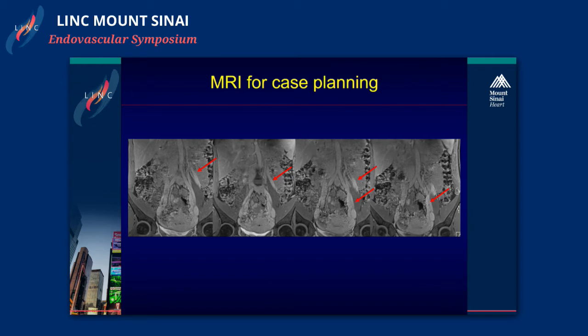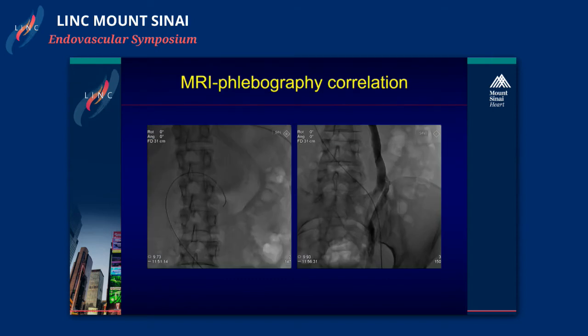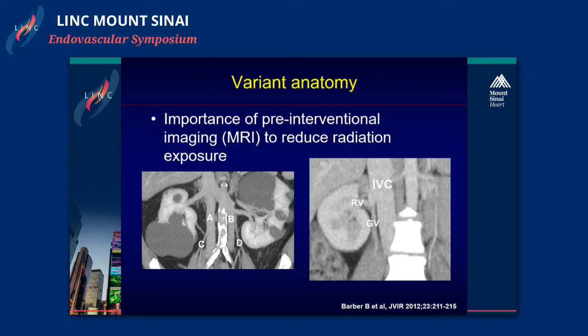I use MR imaging for case planning. Here you can see, indicated by the arrows, the course of the left ovarian vein that at a certain point at the iliac level gives a bifurcation. And here you can see the corresponding phlebography with cannulation from the groin of the left ovarian vein, and you can see the bifurcation at the level of the iliac crest. There is a lot of variant anatomy, and therefore pre-interventional imaging is very important. Here are some examples of gonadal veins coming off either directly from the inferior caval vein or the renal vein.